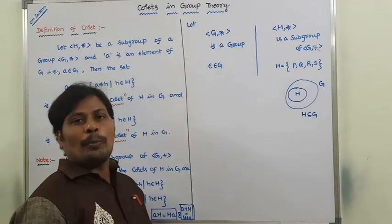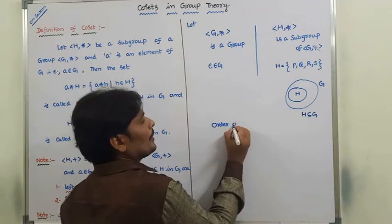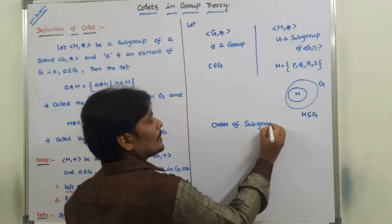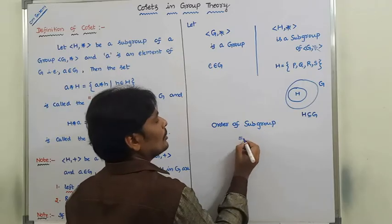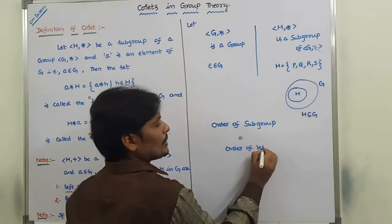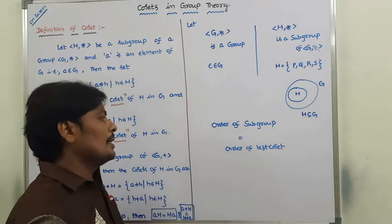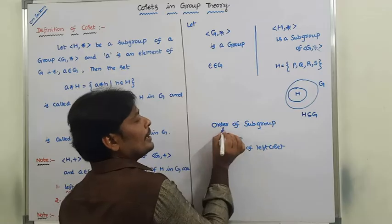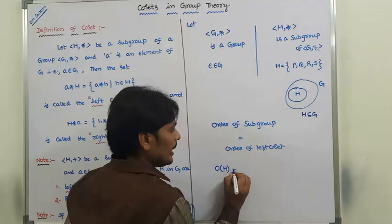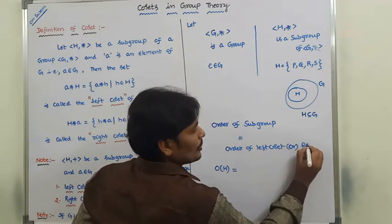The next property is: the order of the subgroup is equal to the order of the left coset or right coset. That is, order of H equals order of left coset A·H equals order of right coset H·A.